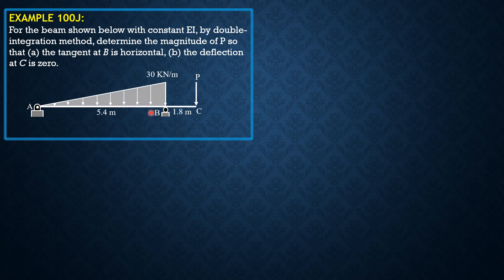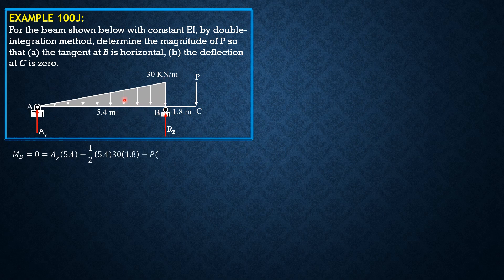Here is the given figure. First, let's solve for the reactions AY and RB. Taking moment about B equals zero: AY times 5.4 plus B times 1.8 minus one-half of 5.4 times 30 times one-third of 5.4, which is 1.8, equals zero. Simplifying and solving for AY in terms of B: AY equals 27 minus B over 3.